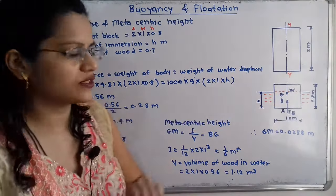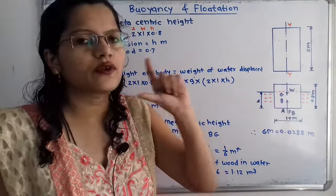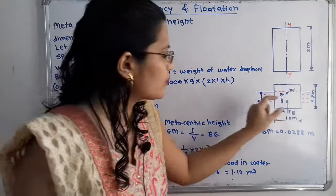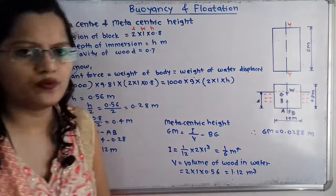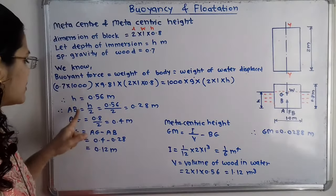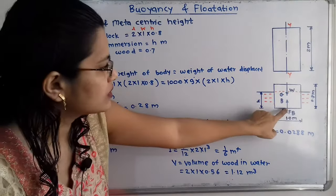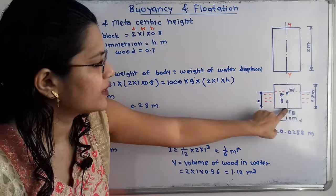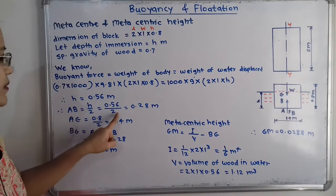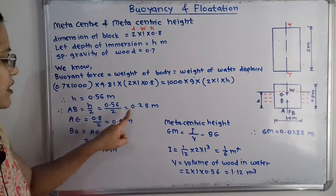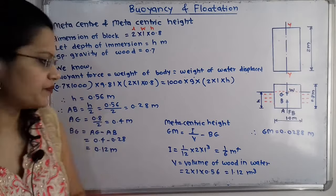Now, the location of center of buoyancy B from the base is H/2 = 0.56/2 = 0.28 m. So the distance from the bottom point A to B is 0.28 m.